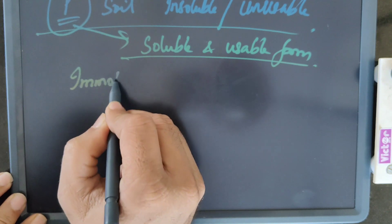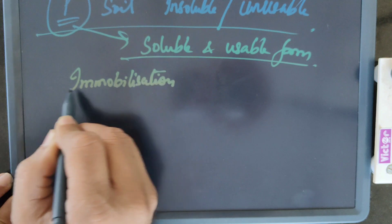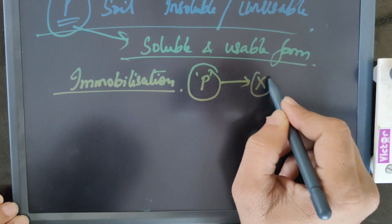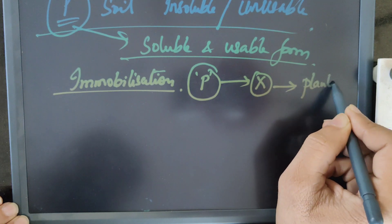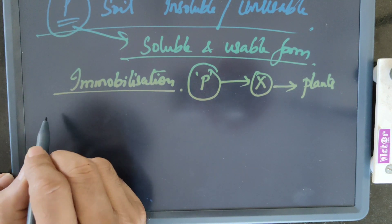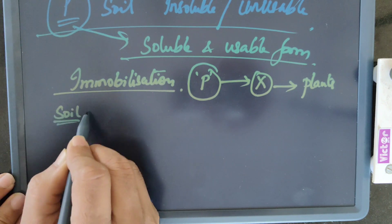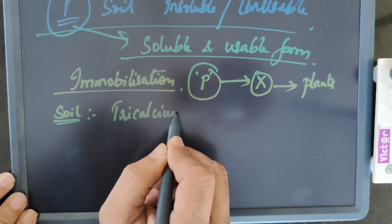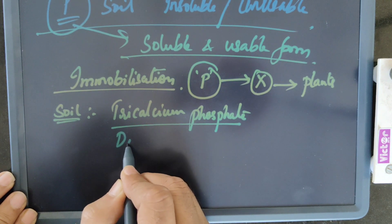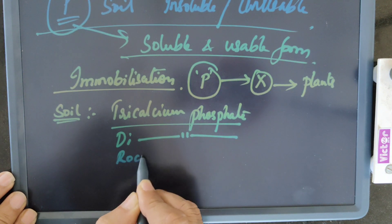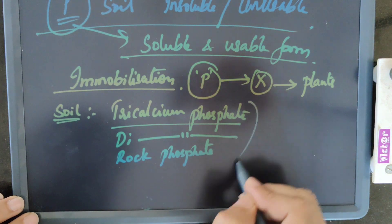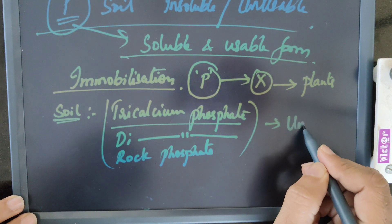The first mechanism is immobilization. Immobilization is nothing but the phosphate is immobilized with a carrier molecule and it is used by plants. Let us see how this immobilization occurs. Some of the basic forms of phosphate in soil are tricalcium phosphate, dicalcium phosphate, and rock phosphate, and these forms are unusable forms.